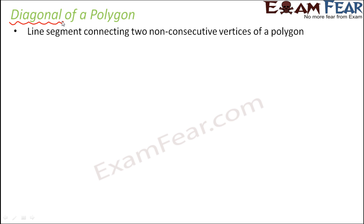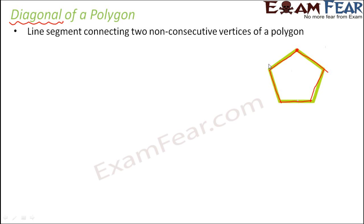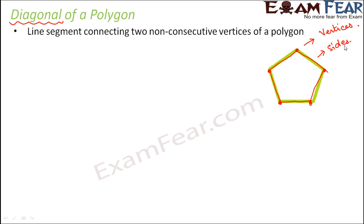When we talk about a polygon, we talk about its sides — the line segments which make the polygon. For example, in this polygon, there is one line segment, a second, third, fourth, and fifth, and these five line segments together form the polygon. The points where the line segments are joined to each other are called vertices — singular: vertex, plural: vertices. These points are the vertices, and the line segments which form the polygon are the sides.